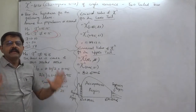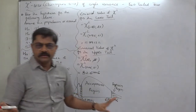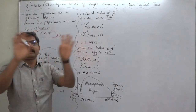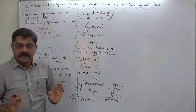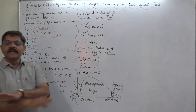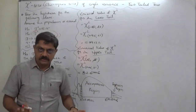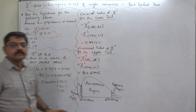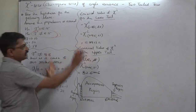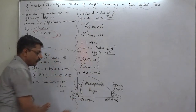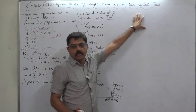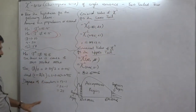In many institutions, the two-tailed chi-square test is not taught at all. In many reference books, nothing is said about it either. Please be careful while watching this lecture. You cannot easily find a discussion on the two-tailed chi-square test elsewhere.